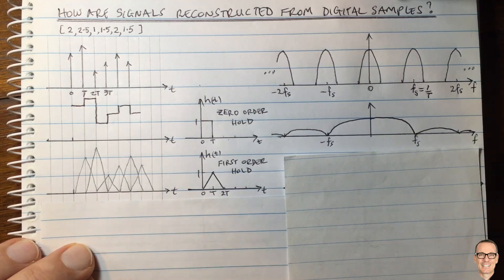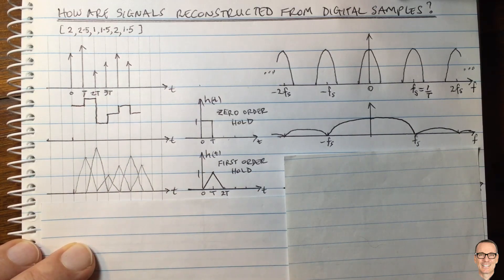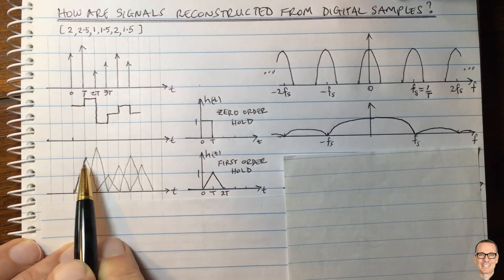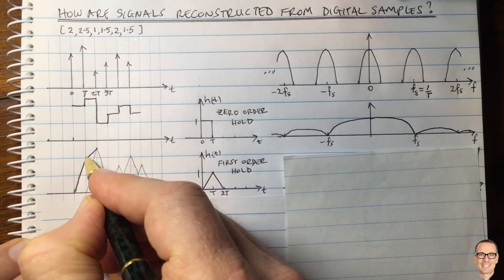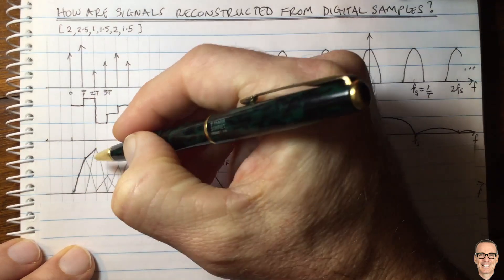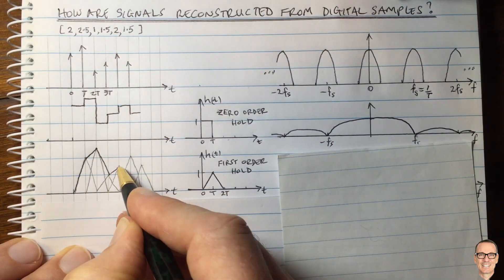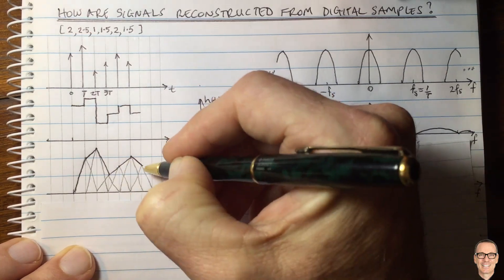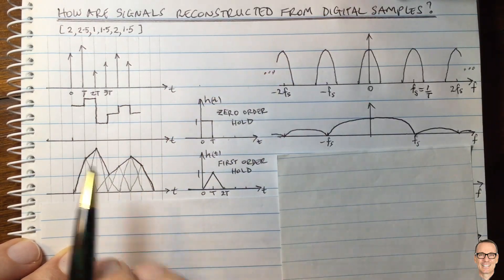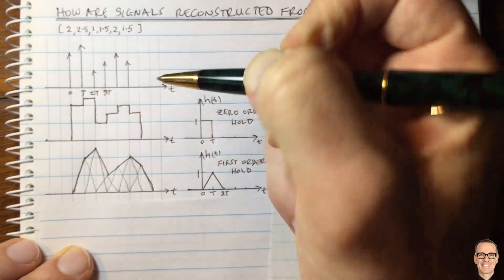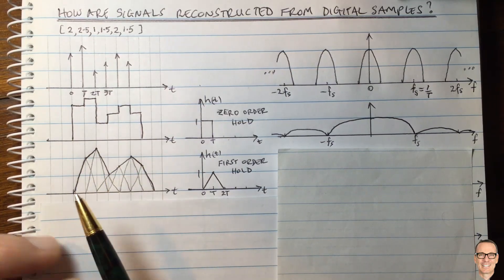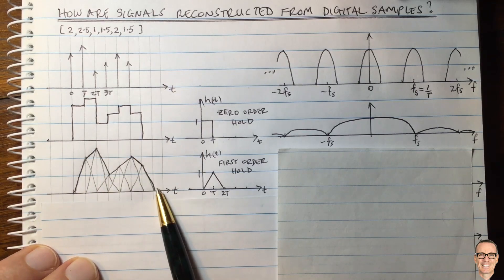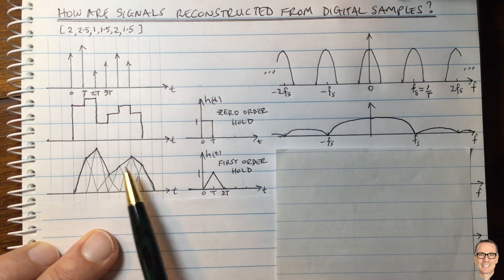I've drawn the responses to each individual impulse in pencil. Now we have to find the overall waveform by adding all these responses. The responses combine such that one is going down while the next is increasing, and you can confirm this gives a straight line between the peaks. So the output signal is a straight line between each of the sample peaks. Compared to the zero-order hold staircase shape, the first-order hold gives a much smoother result.